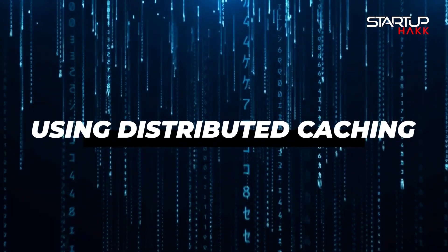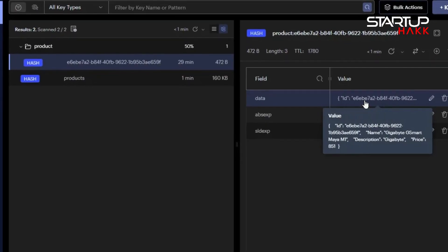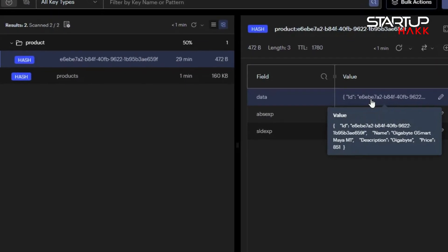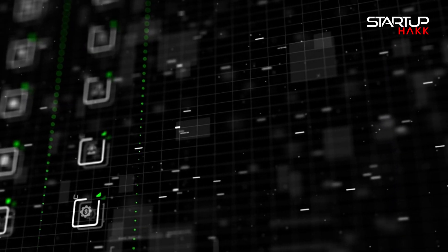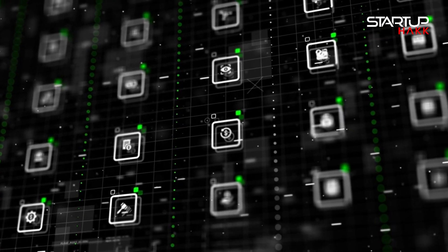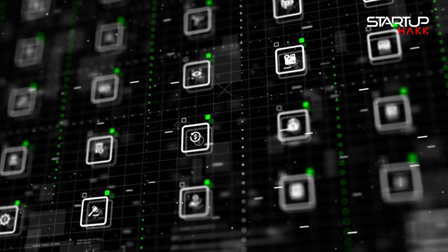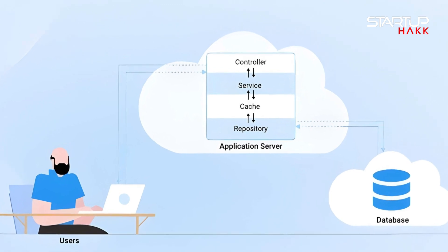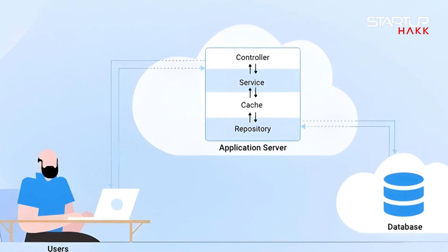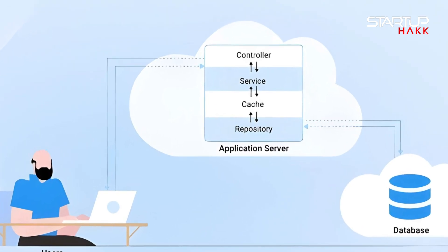Number four: using distributed caching. Distributed caching in .NET 8 leverages external cache stores like Redis or SQL Server — most commonly Redis. This type of caching is beneficial for applications running on multiple servers, ensuring data consistency and availability. Implementing distributed caching requires configuring the cache provider and managing the connection settings. This approach helps in scaling applications and maintaining higher performance even under heavy load.